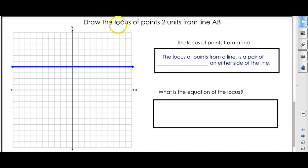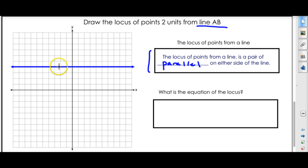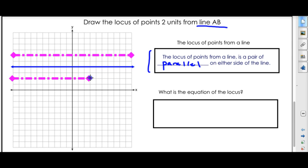The next one is we're going to draw a locus of a point two units away from a line. Here is the theorem we're going to use: the locus of points from a line is a pair of parallel lines on either side of the line. We want to draw this set of all points two units from this line. There are two ways — we can go up two units, and we get this nice dotted line. By the way, the locus is usually drawn with a dotted line.